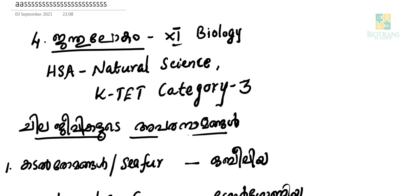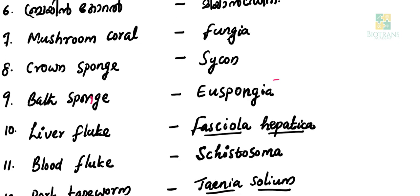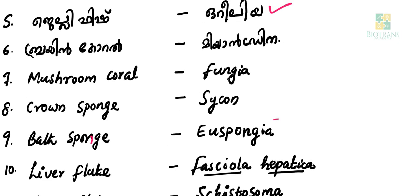We are going to discuss the chapter of Animal Kingdom. It is called Obelia. C-Punga, Gorgonia, Adamsea, and Pennatula are examples. Jellyfish is Aurelia. Brain Coral is Meandrina. Mushroom Coral is Fungia.